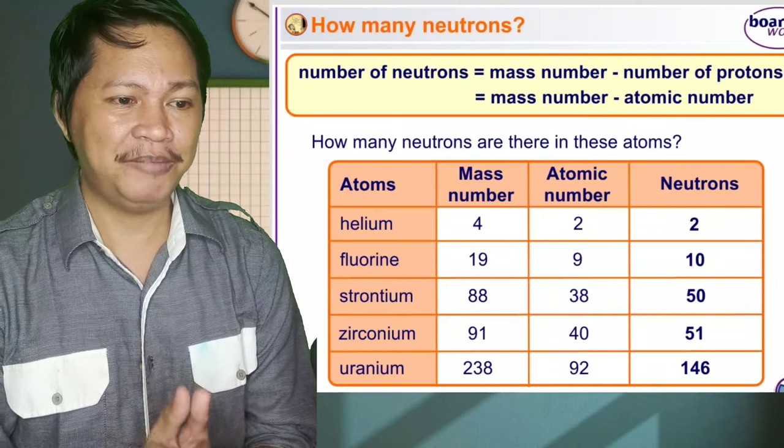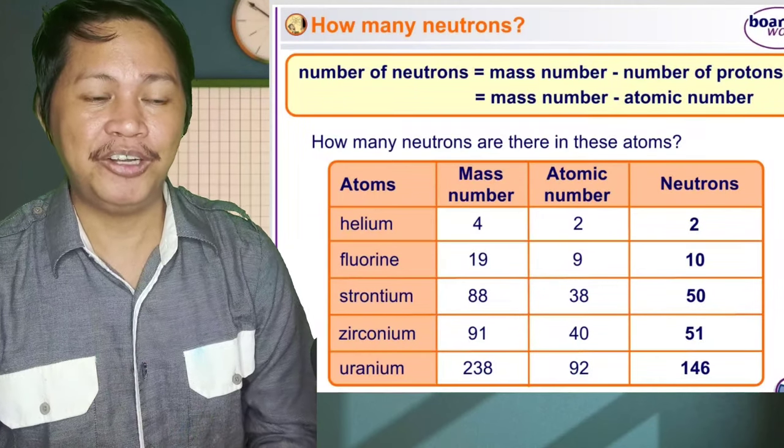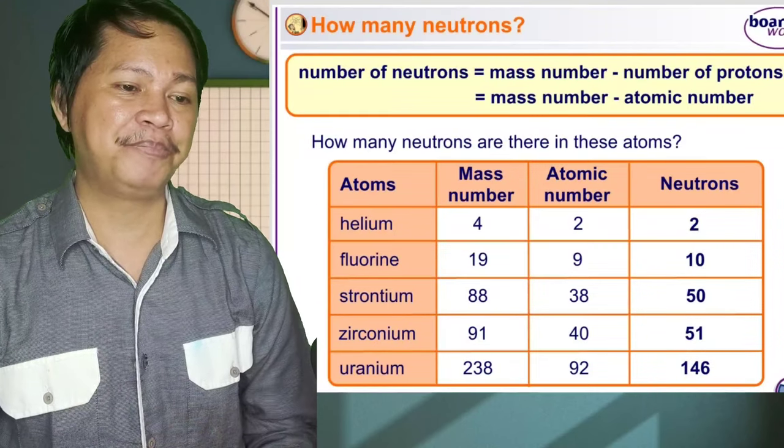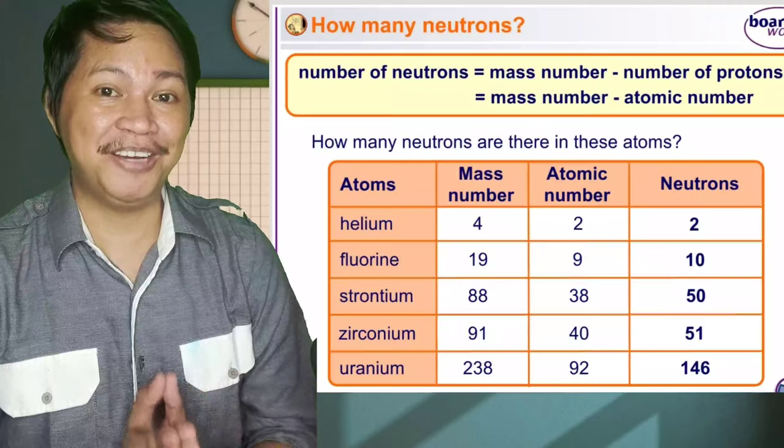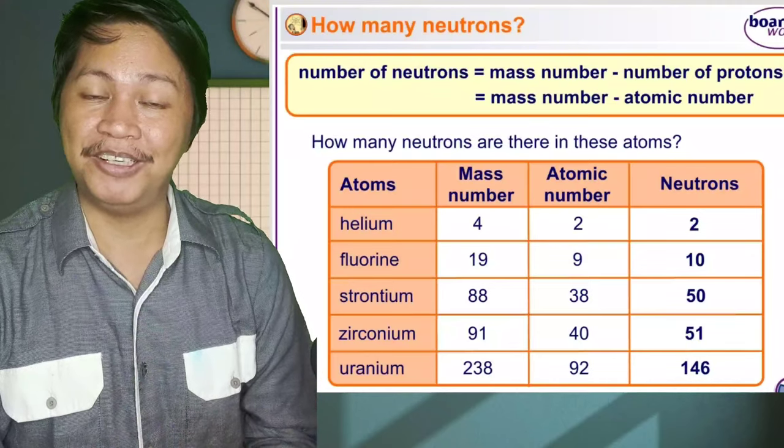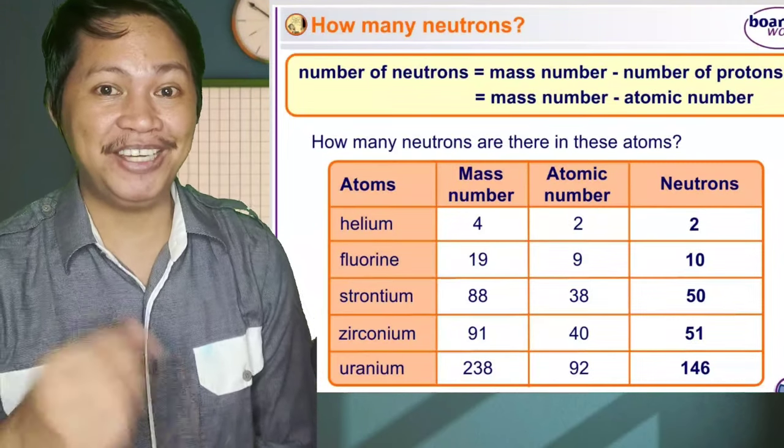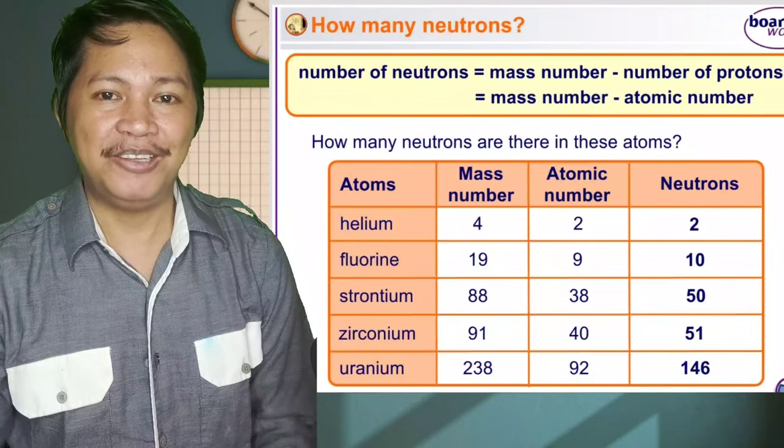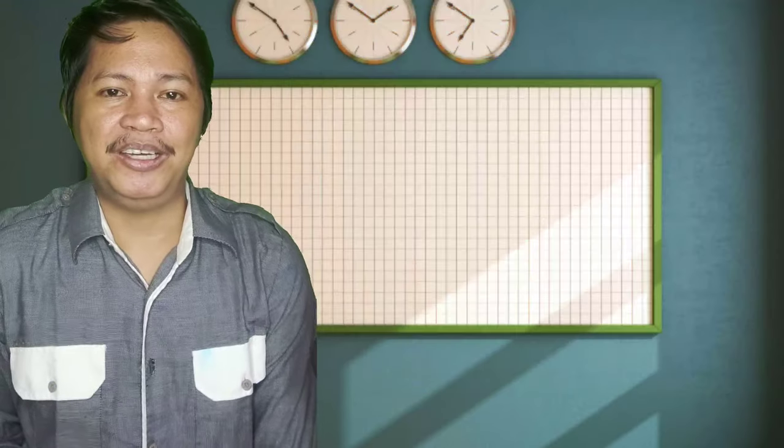We have 4 for the mass number, 2 for atomic number. Then you get 2 because you subtract the mass number minus number of protons, or mass number minus atomic number. Then you get the number of neutrons. So please remember that all the time.